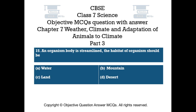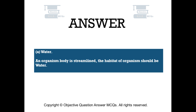Question number 15. An organism's body is streamlined; the habitat of the organism should be: Option A: Water. Option B: Mountain. Option C: Land. Option D: Desert. The right answer is Option A — Water. The habitat of a streamlined organism should be water.